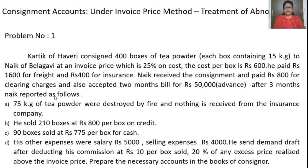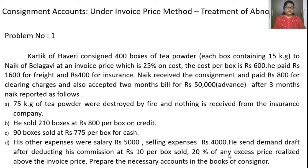After 3 months, Nayak reported as follows. 75 kg of tea powder were destroyed by fire — this is an abnormal loss — and nothing was received from the insurance company, meaning it is completely shown in the consignment account as a loss. He sold 210 boxes at Rs. 800 per box on credit, and 90 boxes at Rs. 775 per box for cash. His other expenses were salary Rs. 5000 and selling expenses Rs. 4000. He sent the demand draft after deducting his commission at Rs. 10 per box sold and 20% of any excess price realized above the invoice price. Prepare the necessary accounts in the books of the consignor.